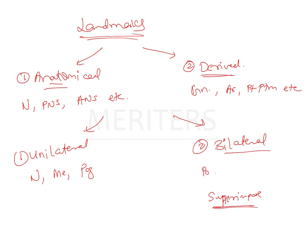Examples of bilateral structures are the porion, the gonion, the mastoid, etc. — whatever is two in number. So the unilateral anatomical landmarks are the ones that can be marked more precisely as compared to the other structures.